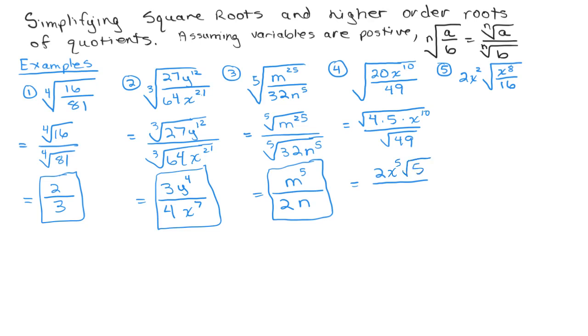But I still have this 5 underneath the square root, so that's still there. And in the denominator, the square root of 49 is 7. So that's as far as we can go with this one.